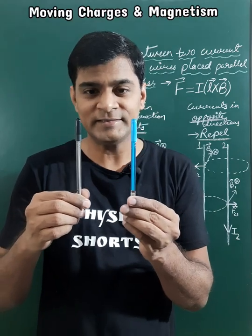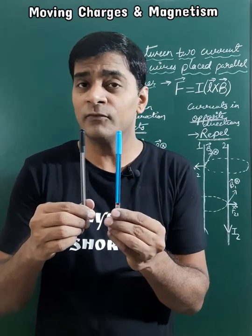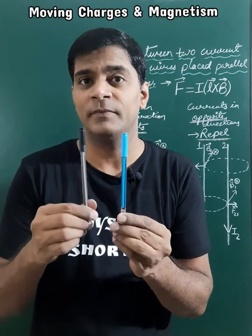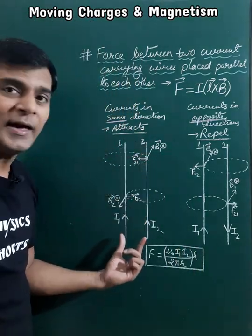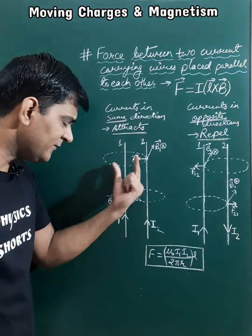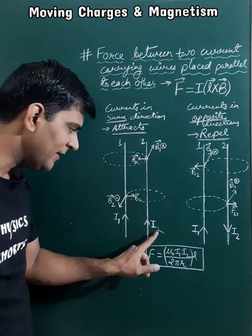Two current carrying wires attract each other if the direction of current flowing through them is the same. Let us consider this situation in which we are placing two wires parallel to each other and the currents flowing in the same direction are I1 and I2.